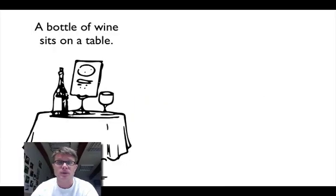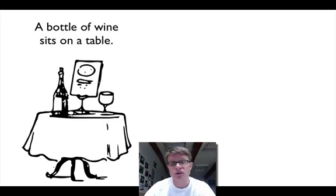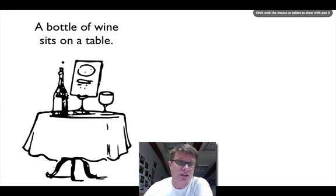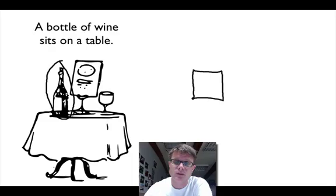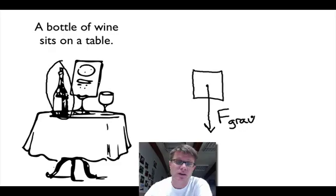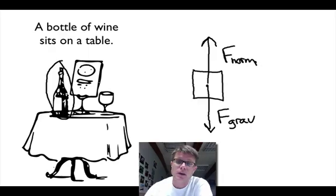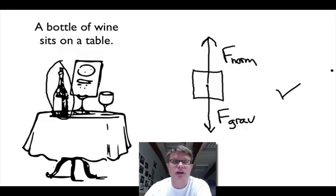Let's go through some practice problems. After I describe each problem, pause the video and try to draw the force diagram yourself. First, a bottle of wine sits on a table. All of mine will use a box to represent the object. Drawing from the center of gravity, there's the force of gravity acting down on the bottle of wine. The bottle of wine is not moving, so there is an equal force in the other direction — the normal force. There are no other forces acting on the object, so this is the correct free body diagram for a bottle of wine sitting on a table.